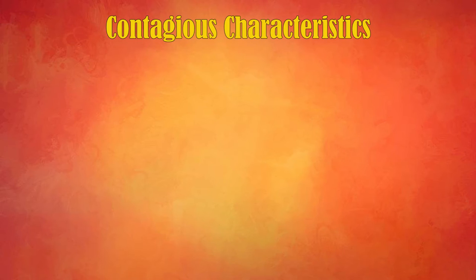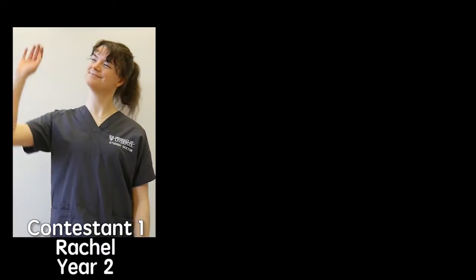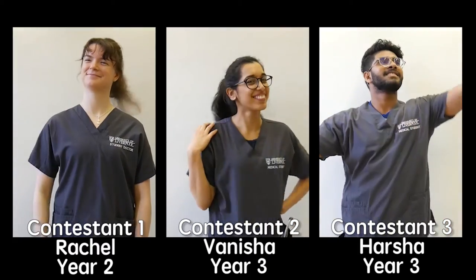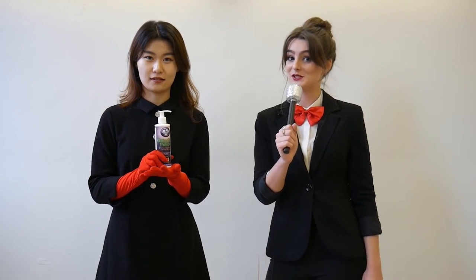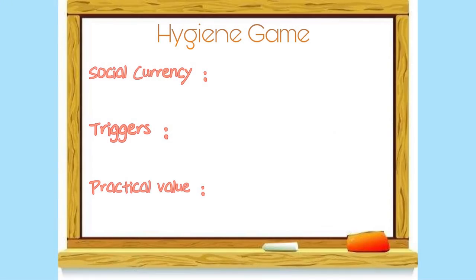As Berger said, contagious characteristics, also concluded as the STEPPS framework, include social currency, triggers, emotion, public, practical value, and stories. In the first group video, we chose to present the importance of hygienic hand washing practice in the form of a game show. The reason why we selected this clinical skill and form was considering social currency, triggers and practical value.